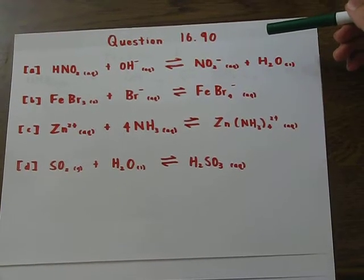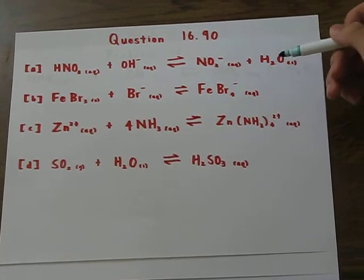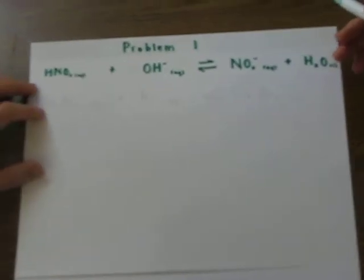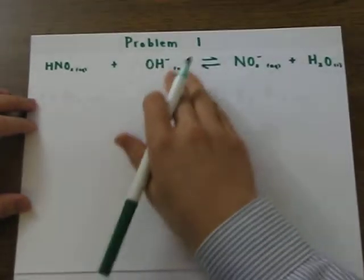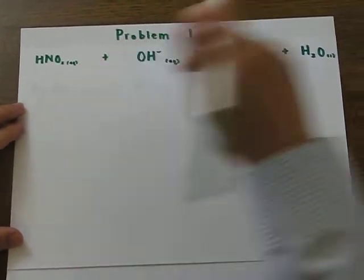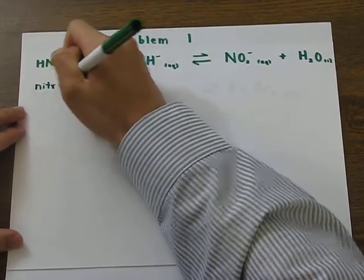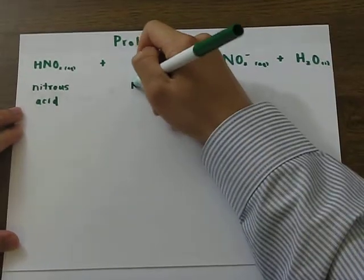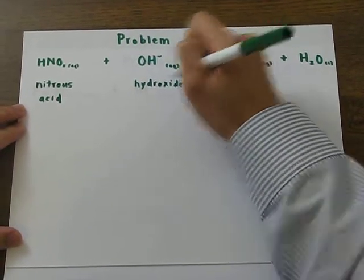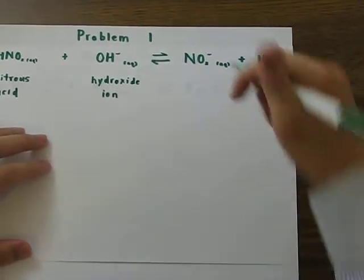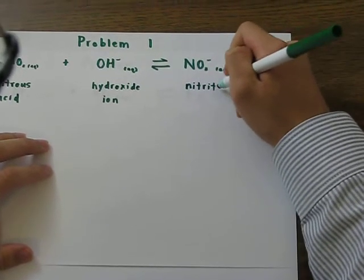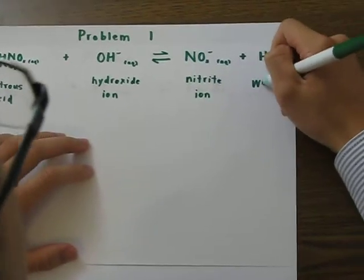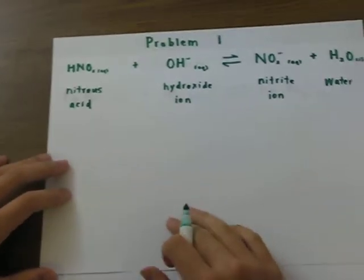Now that you know the definition of a Lewis acid and a Lewis base, and have the prerequisite skills, let's go tackle problem number 1 from question 16.90. So, first thing we have to do, is we have to draw the Lewis structure for each one of these four chemical species. The first one, as many of you guys will know, is nitrous acid. The second one, of course, is a hydroxide ion. Now, we draw the Lewis structures.